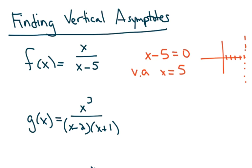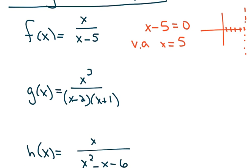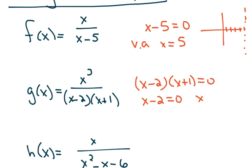In the next one, g of x, you can have more than one vertical asymptote. When you set this denominator equal to 0 in order to solve, you have to use the zero product property — that's where you set each of the parentheses equal to 0 and then solve. It turns out that the two vertical asymptotes are at 2 and negative 1.